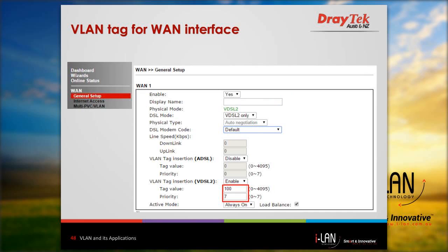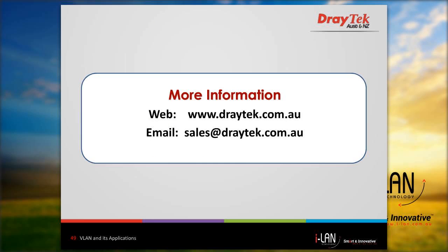VLAN connection providers do use VLAN tagging for WAN, and this can be set up under WAN General Setup. The VLAN ID can be set according to the details provided by the internet service provider to bring the NBN internet up. For more information, please visit our website at www.draytek.com.au/support or you can email us at sales@draytek.com.au.